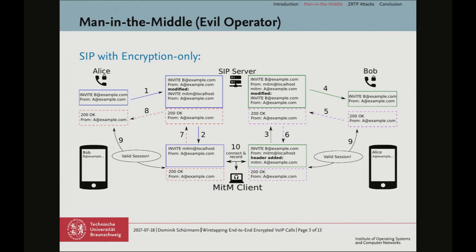First, let me introduce what we did at the beginning. If you just have SIP with encryption only, or no encryption, there's a setup like this — a simplified view with just one SIP server. You have Alice and Bob doing a call using a SIP server. If you're an evil operator, you can do a man-in-the-middle here, some eavesdropping. It's very, very simple. We did an implementation for a SIP server, Kamailio. We're just rewriting some headers in the session initiation and redirecting the call from Alice to a special client running on the server. This special client takes the call, does its own call to Bob, then connects both multimedia streams, and you get your eavesdropping or wiretapping. Very, very simple — it works.